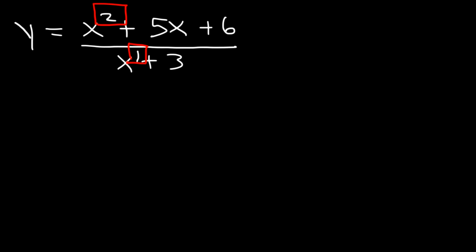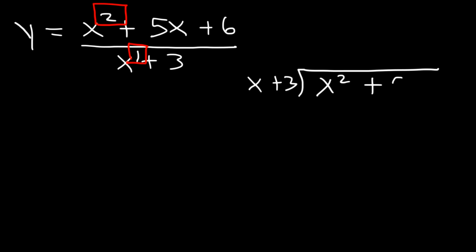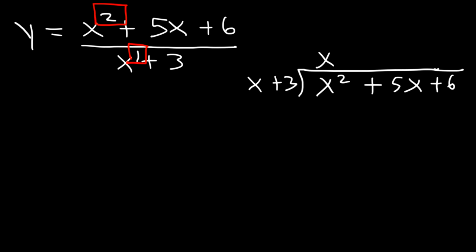To find the slant asymptote, you need to use long division. Divide: the numerator x squared plus 5x plus 6 goes on the inside. Divide x squared by x to get x. Then multiply: x times x is x squared, and x times 3 is 3x.